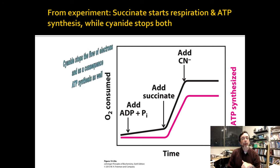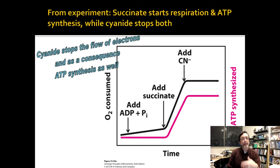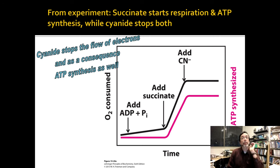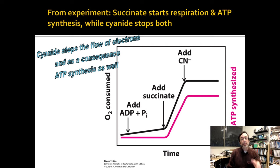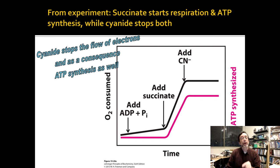Cyanide messes with the cytochrome oxidase, so it stops electron transfer. But of course there's no more ATP synthesis either. It's important to say that in intact mitochondria, the two are usually coupled.